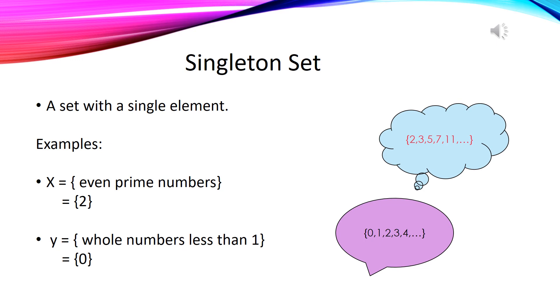In the second example if we have a set of whole numbers less than one, and if we want to count, then it contains one element that is zero. As we have already studied that the set of whole numbers starts from 0, 1, 2, 3 and so on. And in this set, zero is a single element that is less than one.